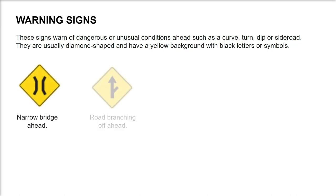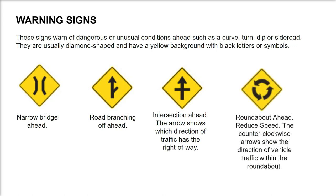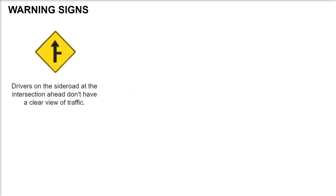Narrow bridge ahead. Road branching off ahead. Intersection ahead — the arrow shows which direction of traffic has the right-of-way. Roundabout ahead: reduce speed. The counterclockwise arrow shows the direction of vehicle traffic within the roundabout. Drivers on the side road at the intersection ahead don't have a clear view of traffic.